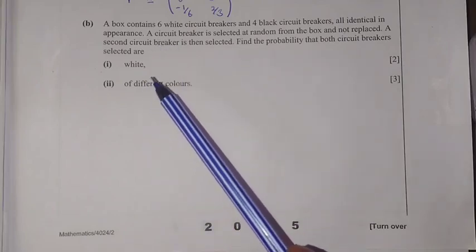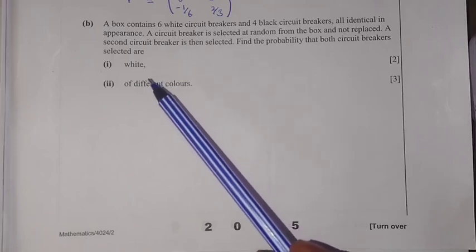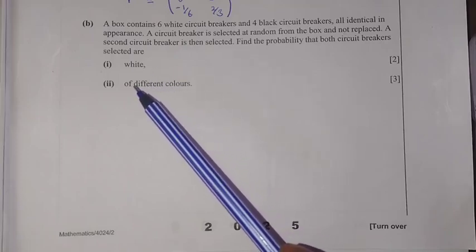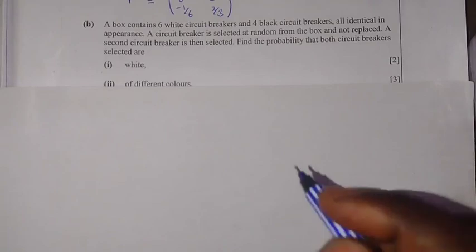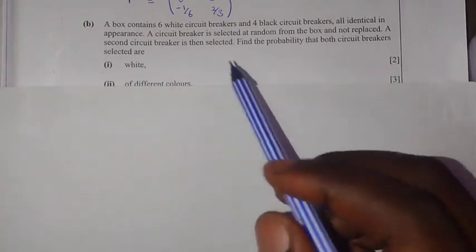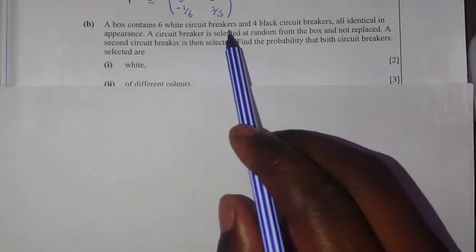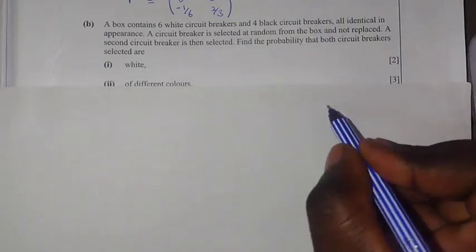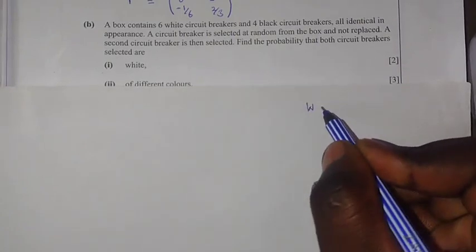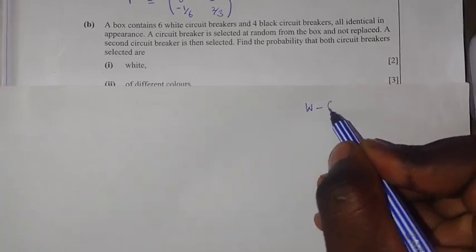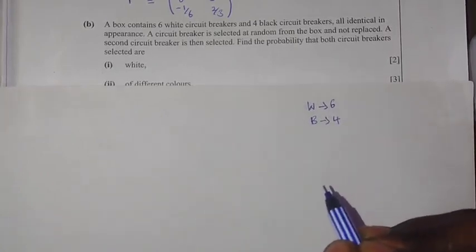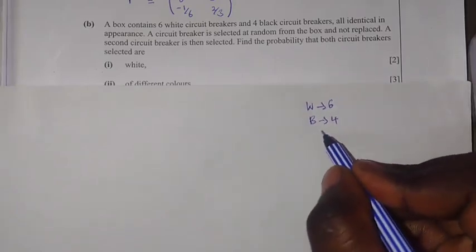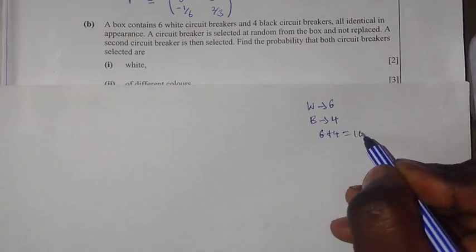In order for us to answer this question, I'm going to use the tree diagram because it will be very easy for you to understand. We are dealing with two types of circuit breakers: white circuit breakers and black circuit breakers. The total number of circuit breakers — just add 6 plus 4 — gives us 10.